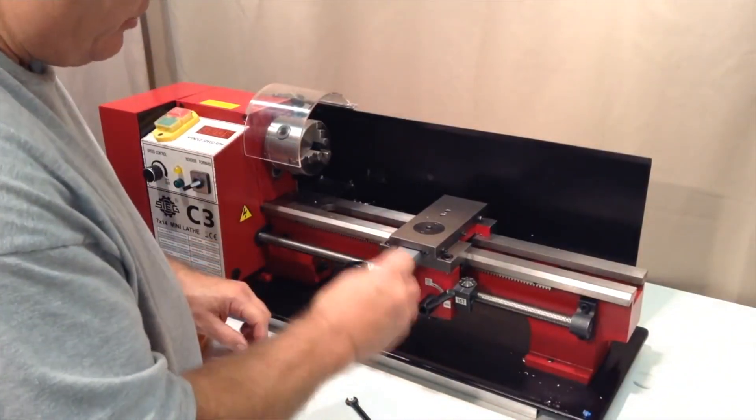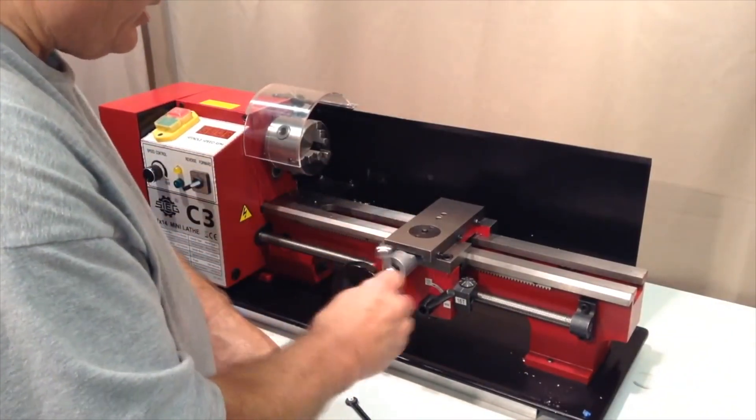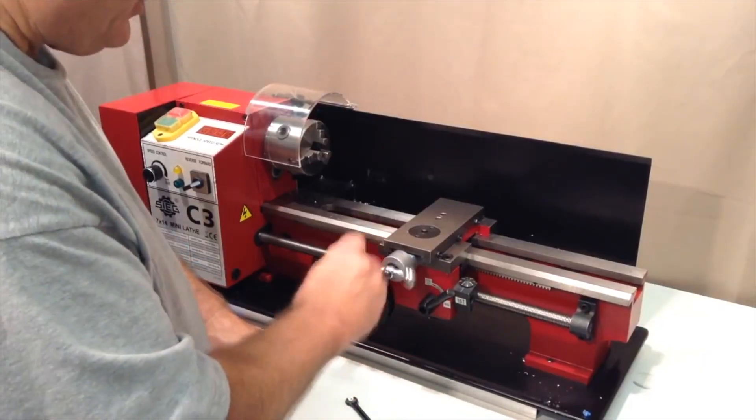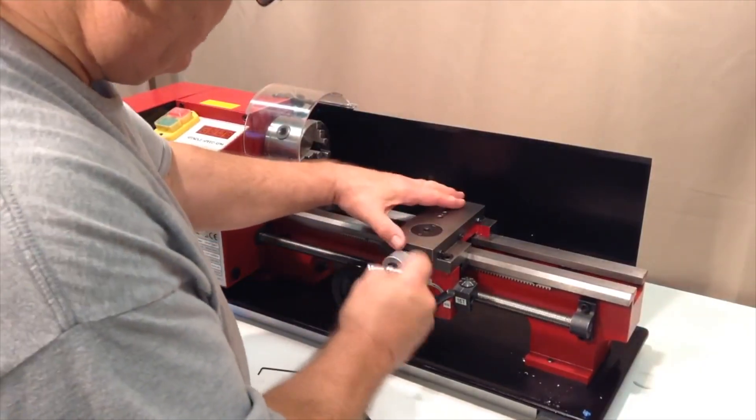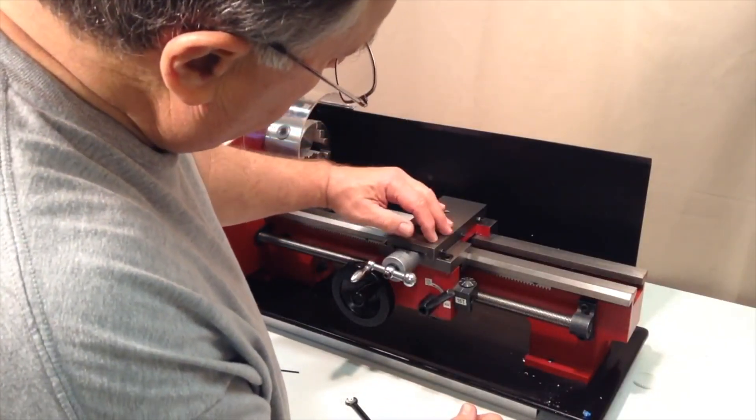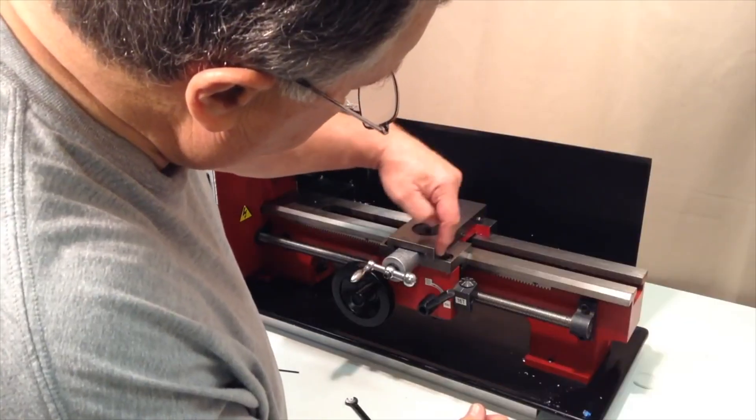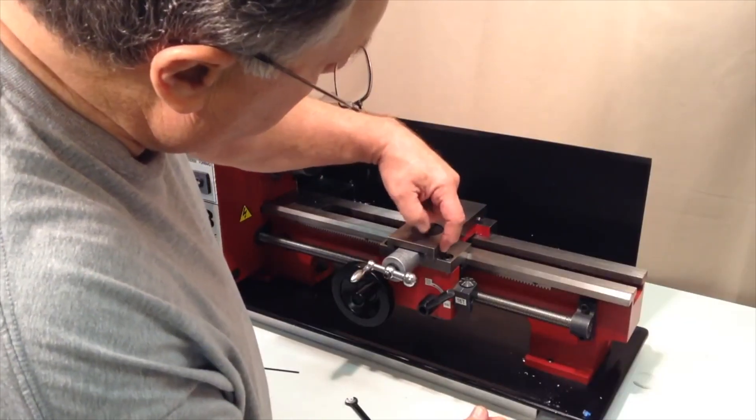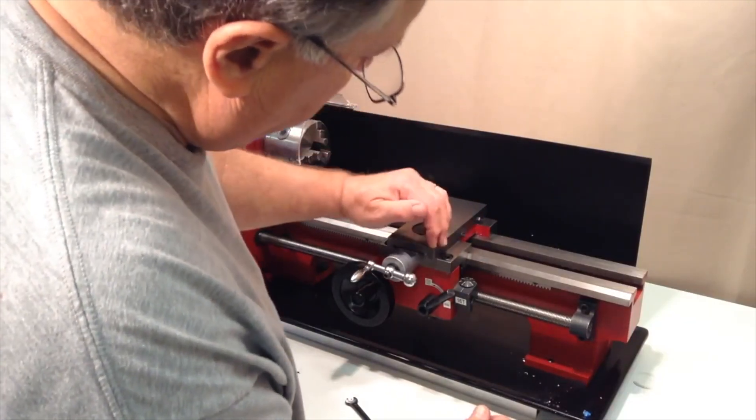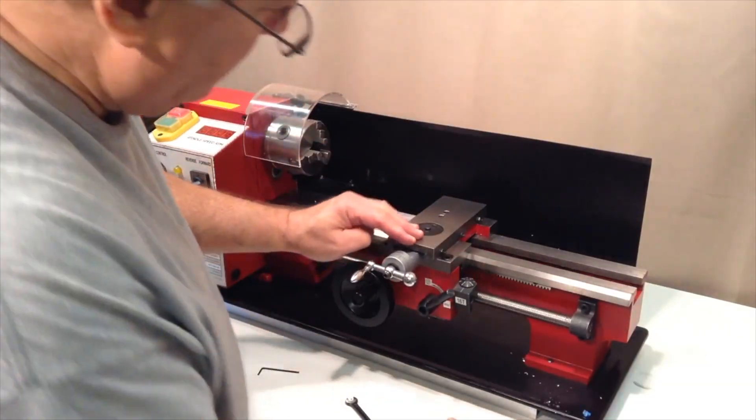So now we're down to the bare bones here of the cross slide and we have better access to that. We can also get a better feel for it as we're making the adjustments. And probably most importantly of all, with the compound removed we have much easier access to these screws here, and in particular this one closest to the front is very difficult to get to and manipulate if you have the compound in place.